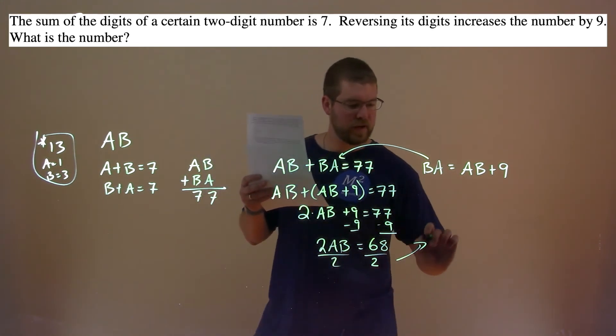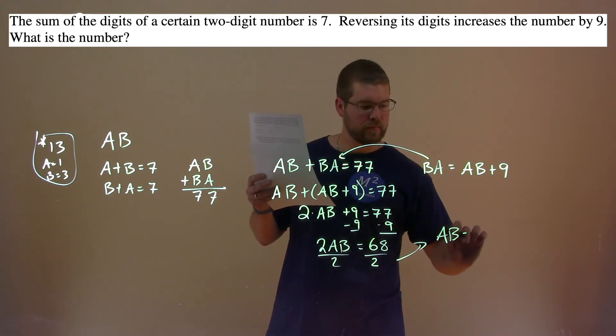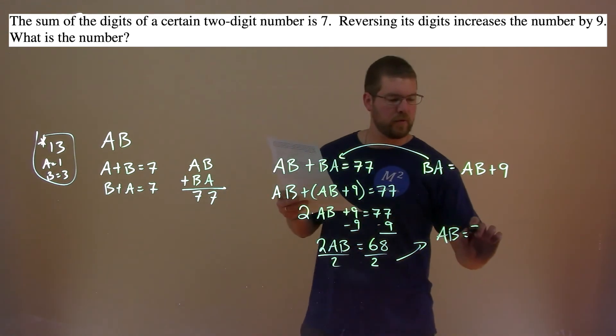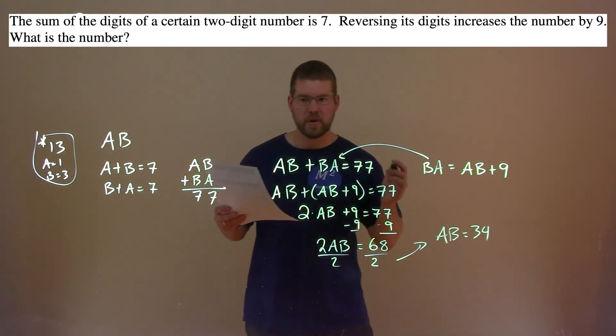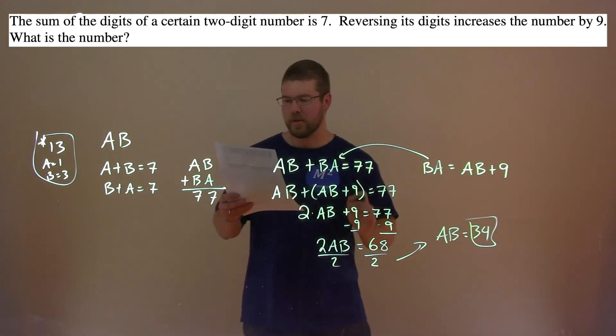And AB is by itself. 68 divided by 2 is 34. And so our two-digit number is 34.